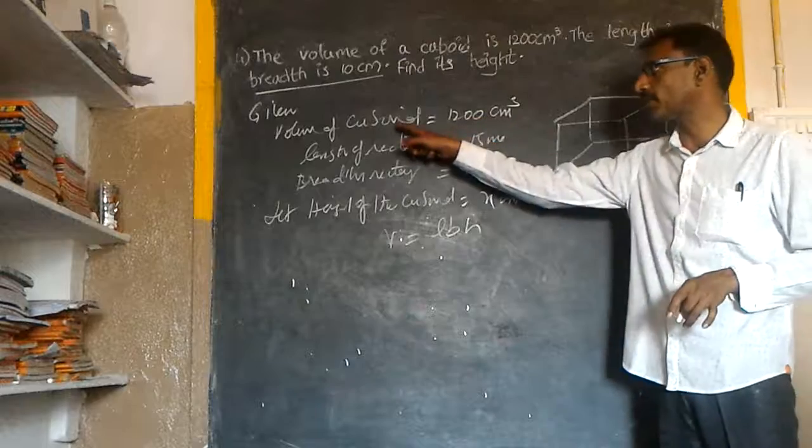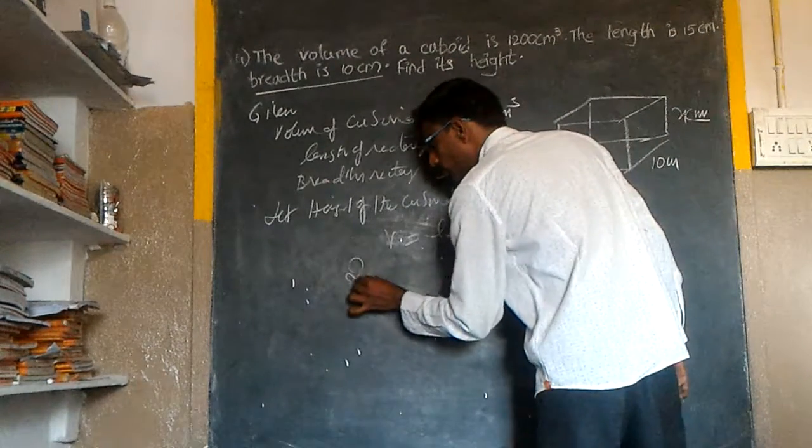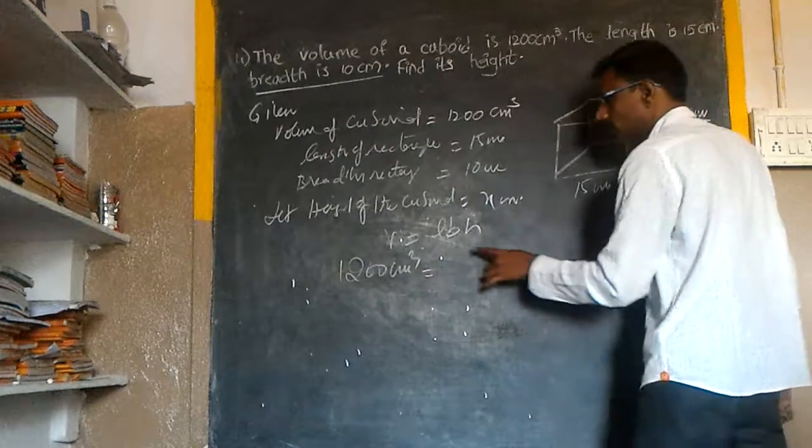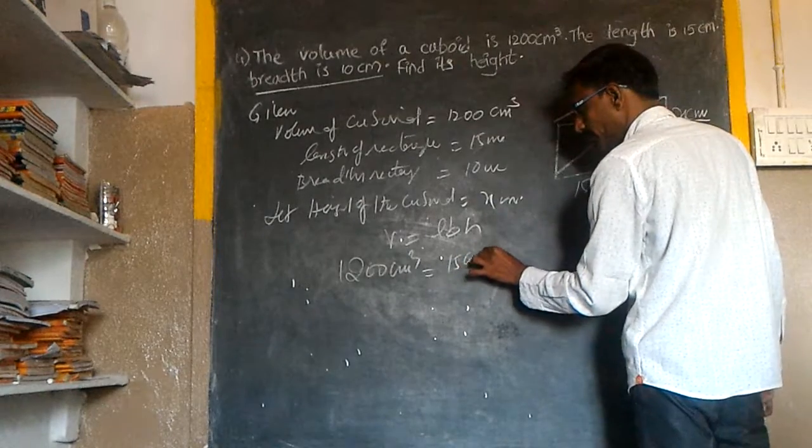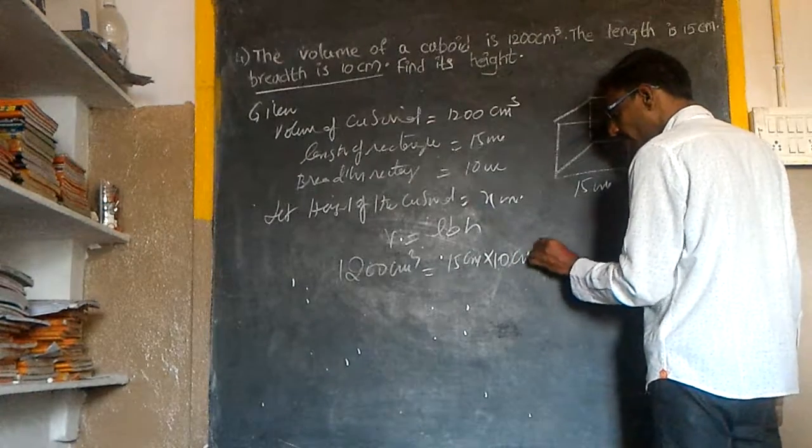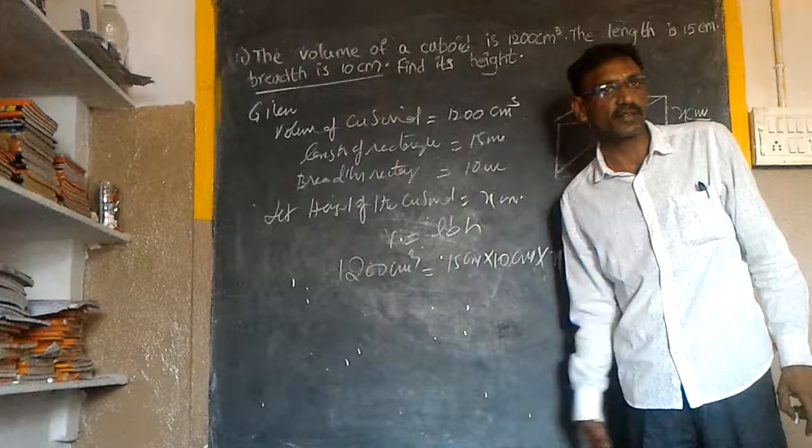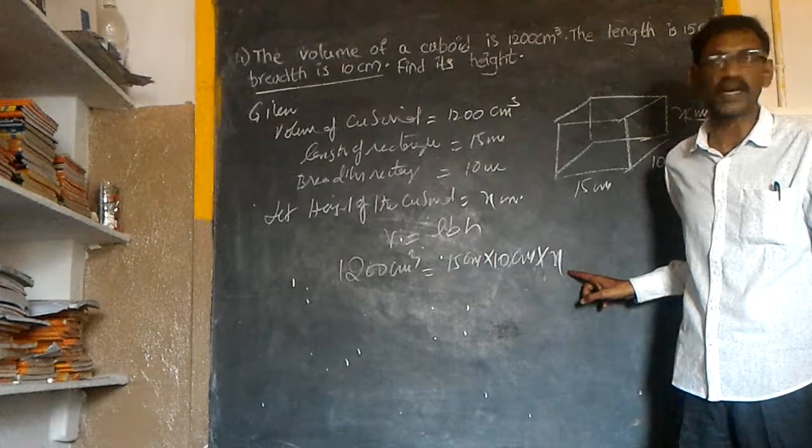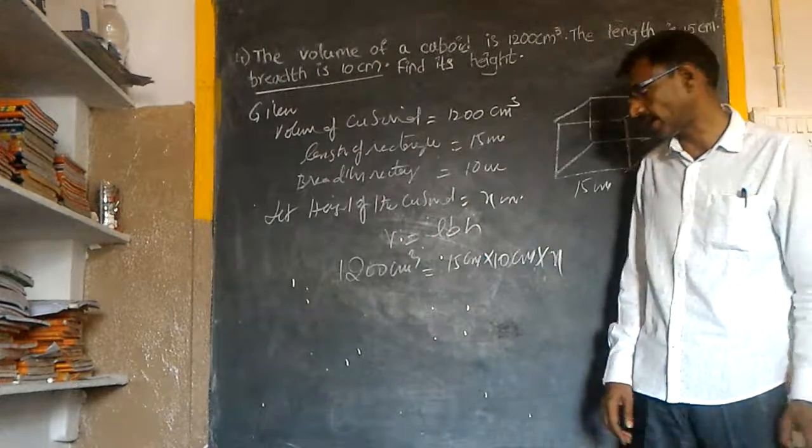Volume of cuboid is equal to length, 15 cm, times breadth, 10 cm, into height X. X is the height of the cuboid.